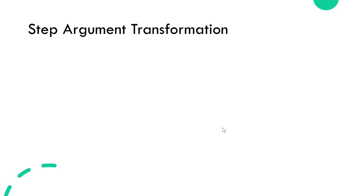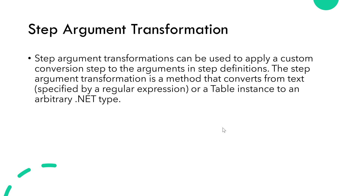So what is step argument transformation? It can be used to apply a custom conversion step to arguments in step definitions. It is a method that converts from text — specified by a regular expression or a table instance — to an arbitrary .NET type. This is exactly going to be helpful when working with an automation testing scenario where we want to convert a particular step to a specified type.